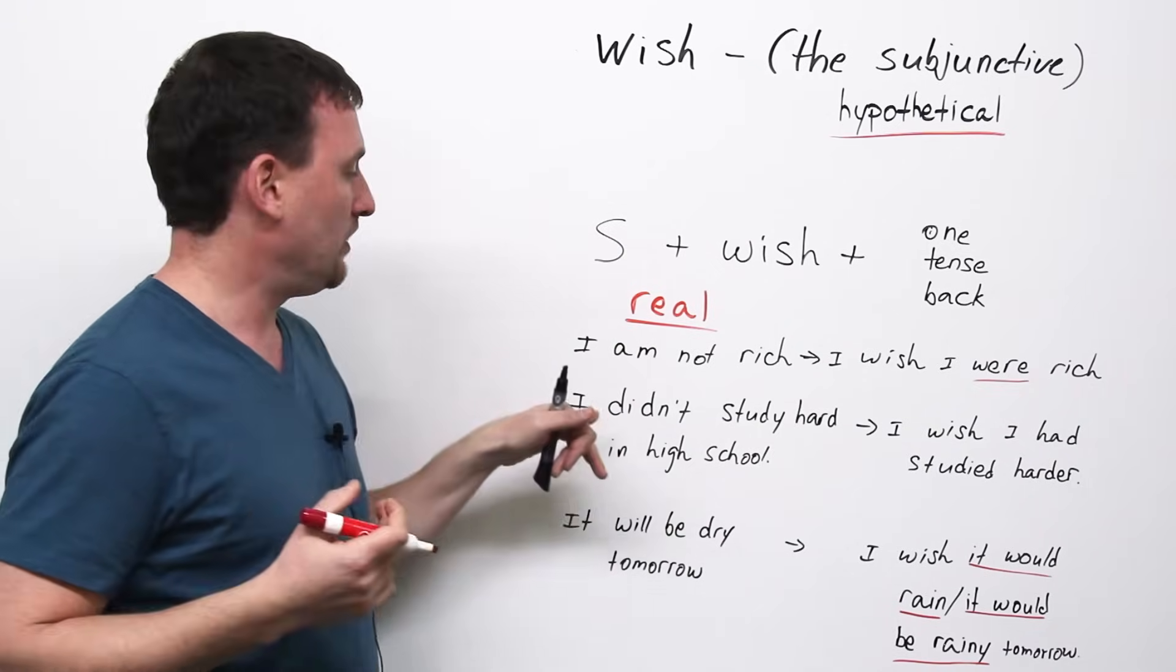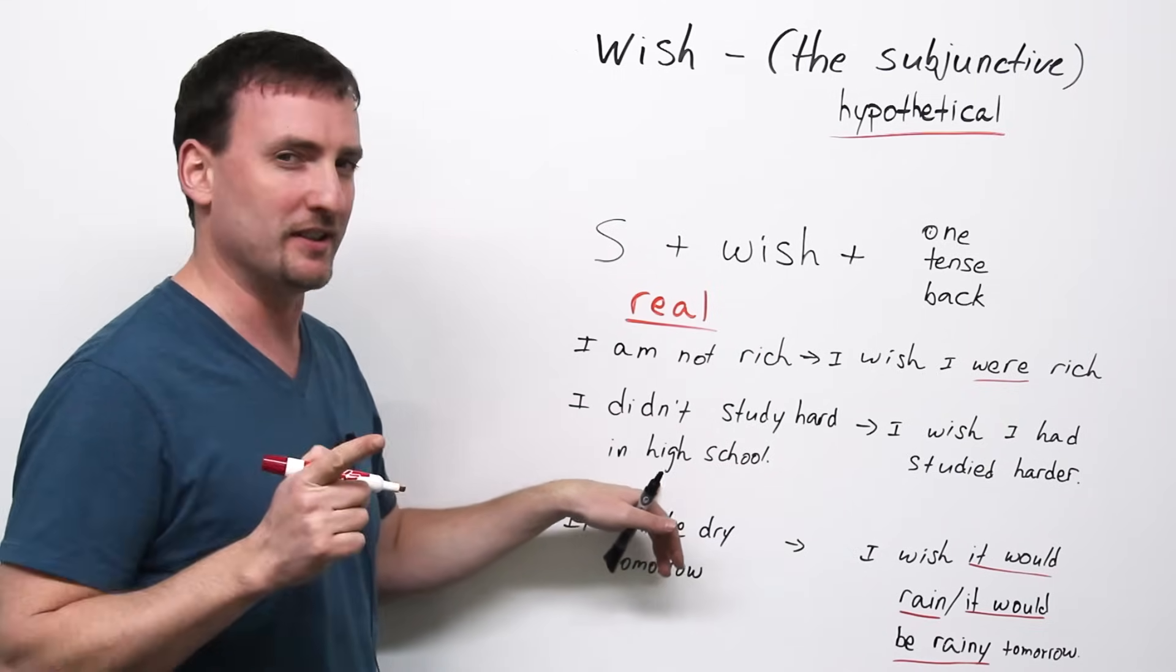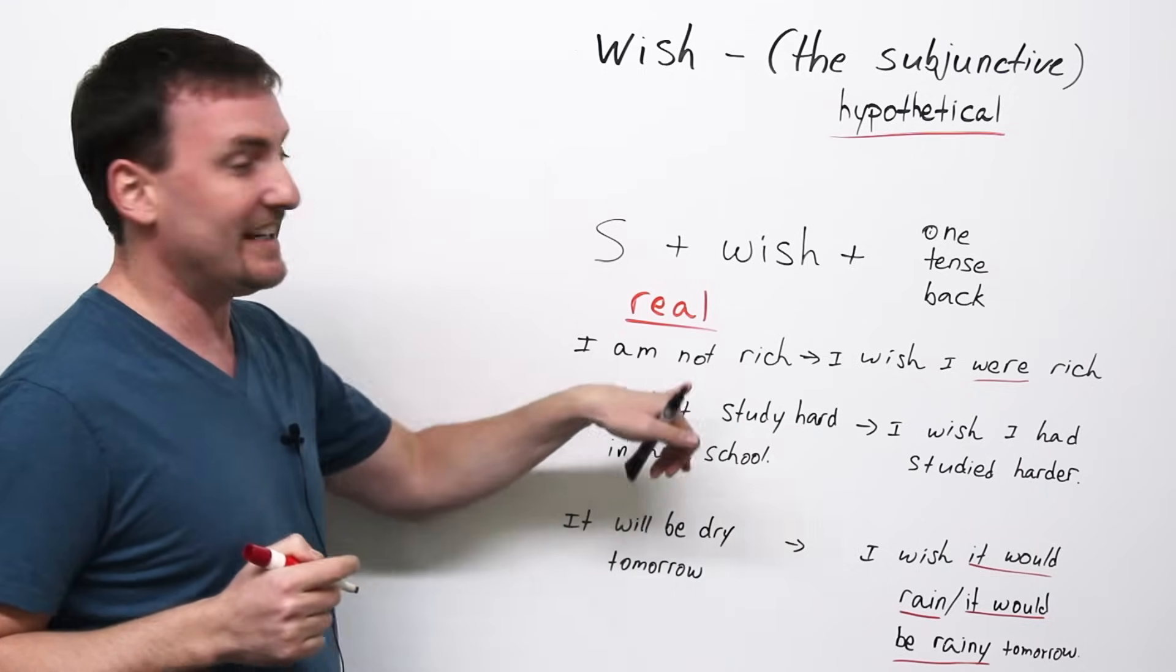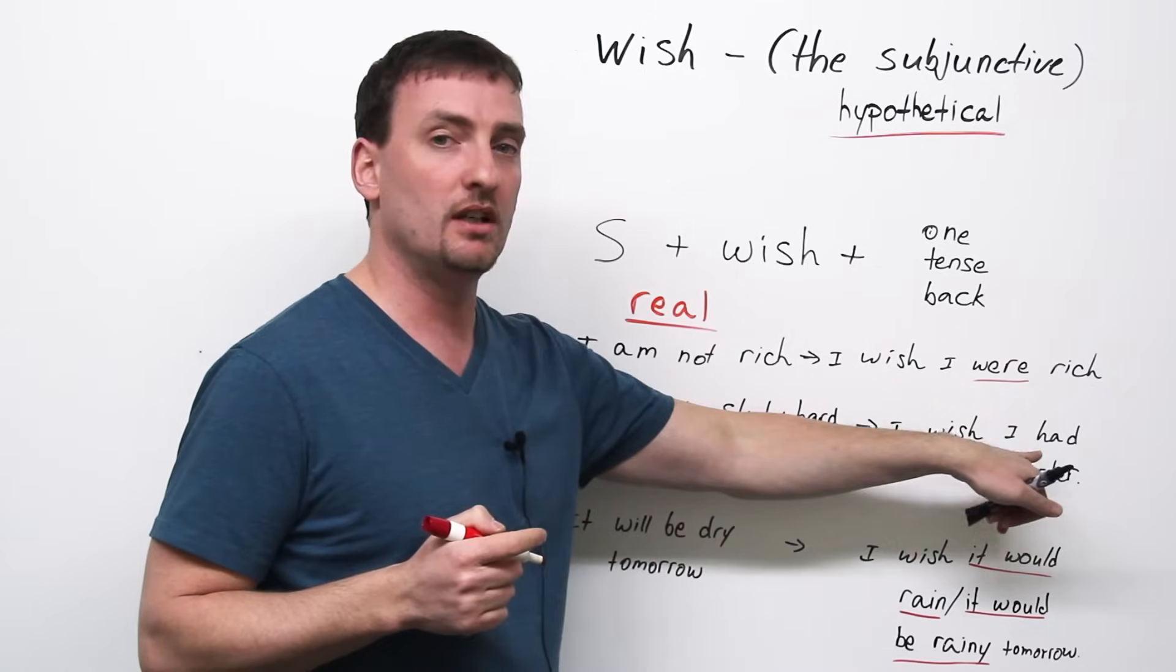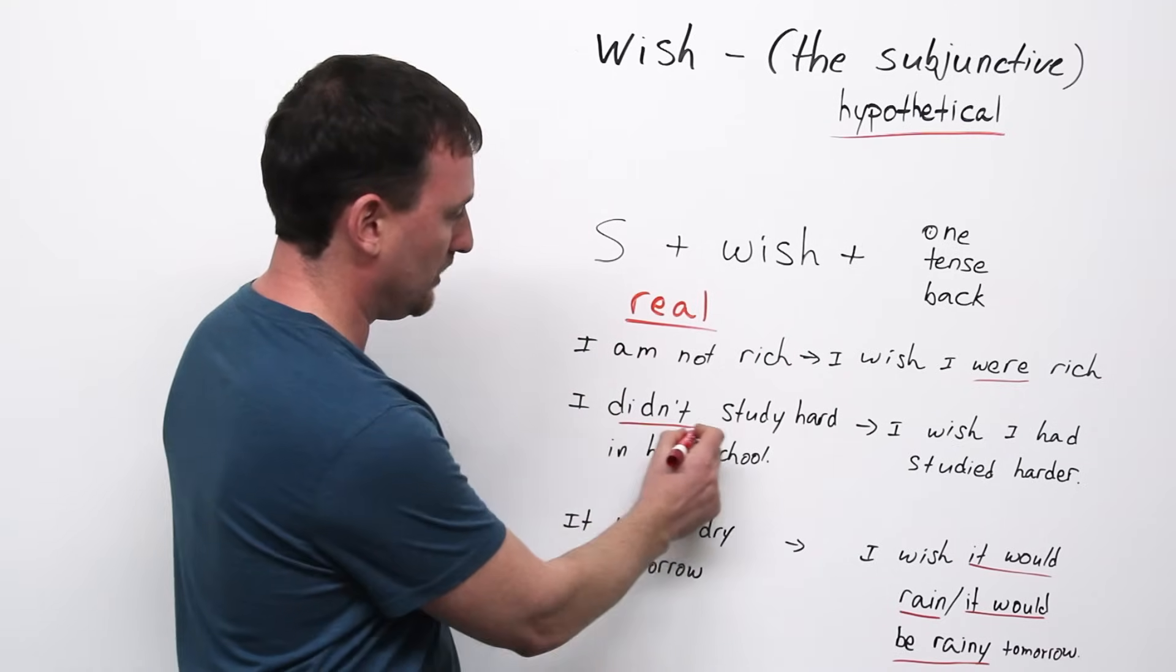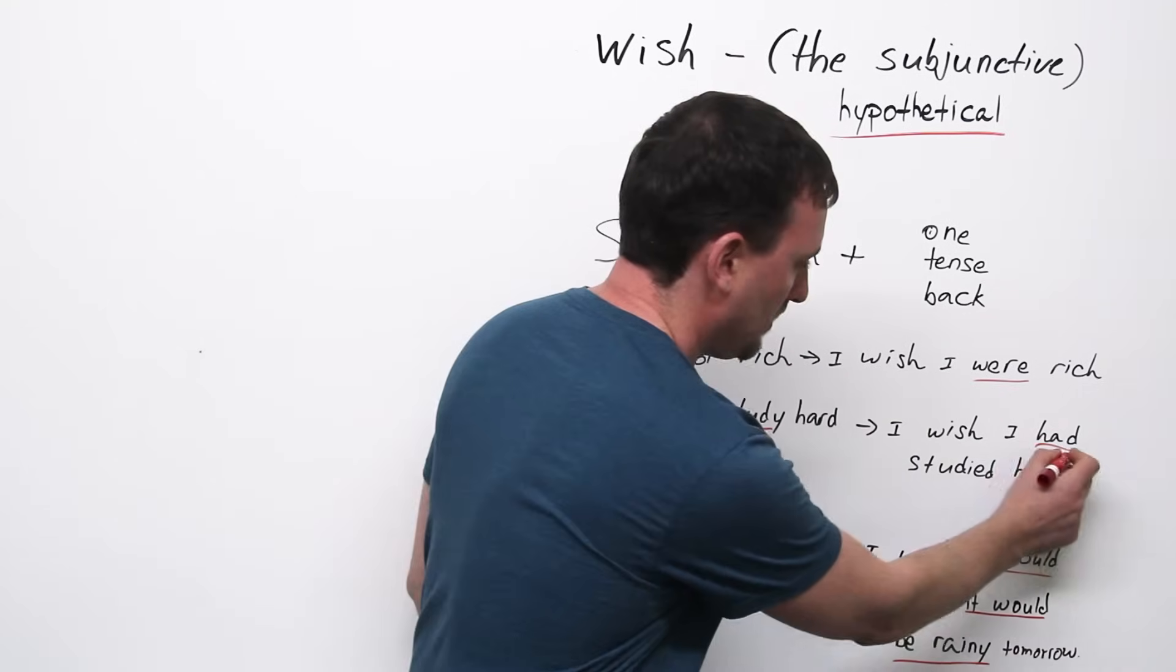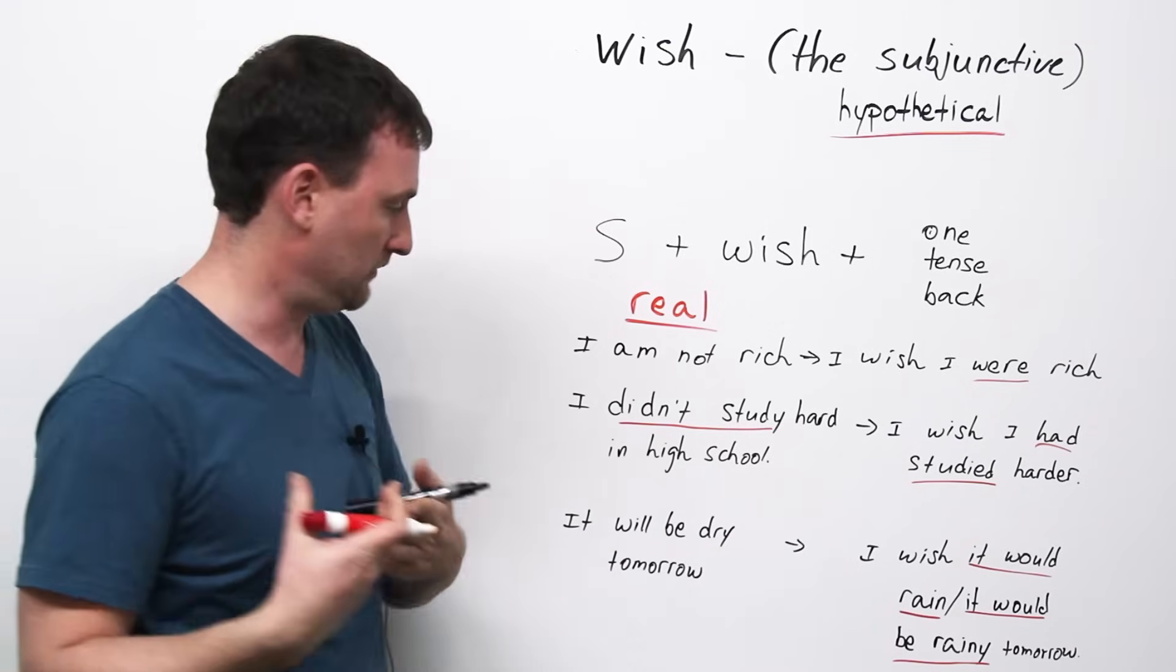High school. I didn't study hard in high school. I was a very bad student. You are very good students. That's why you come here, right? I didn't study hard in high school. So, I wish I had studied harder. Simple past. Past perfect. I go one step back.